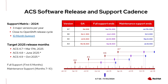Full support begins at the GA or release of a minor version and lasts for six months. During that time, security advisories and high-priority bug fixes are released as needed. Customers and users are expected to upgrade to the latest supported version for updates.